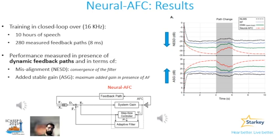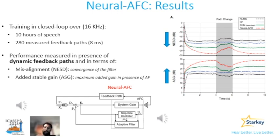On the right plot, I'm showing the average results for different choices of feedback path change from seconds four to six. In the top plot I'm showing the NASD misalignment and the bottom one ASG. As you can see, the red curve, representative of the neural AFC, is outperforming all other methods in terms of convergence rate and accuracy.